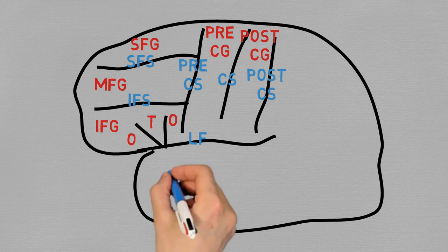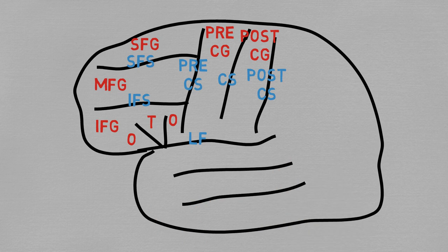The temporal lobe is really easy. We just add the superior and inferior temporal sulci to delimitate the superior, middle and inferior temporal gyrus.